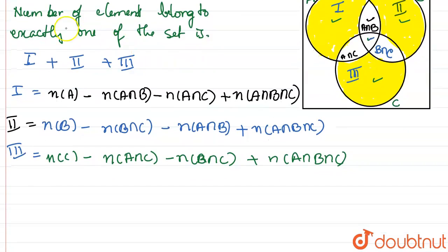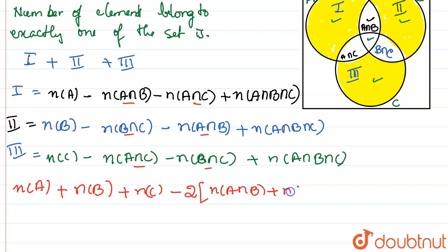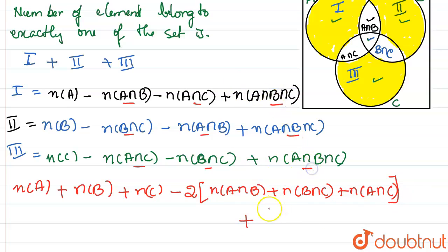Adding all three parts, the intersection terms N(A∩B), N(A∩C), and N(B∩C) each appear twice with negative sign, so we write minus 2 times N(A∩B) plus N(B∩C) plus N(A∩C). The N(A∩B∩C) term appears 3 times positively, so we add 3 times N(A∩B∩C).